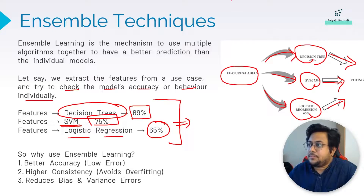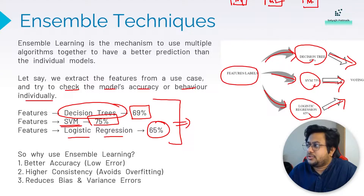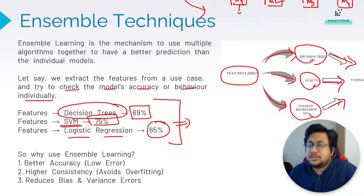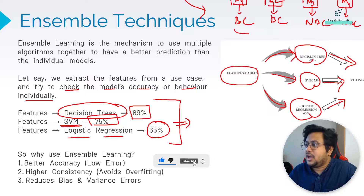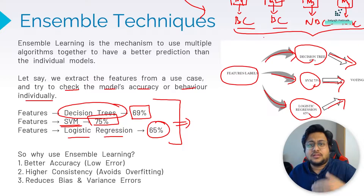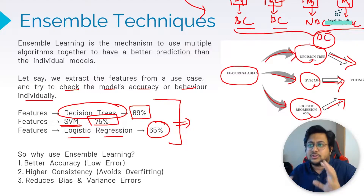For example, you have five models: decision tree, KNN, SVM, Naive Bayes, and another. For a new data point, three predict the patient has breast cancer and two predict they don't. Taking a vote — out of five, three say breast cancer — so your final output is breast cancer. This is the essence of ensemble technique.